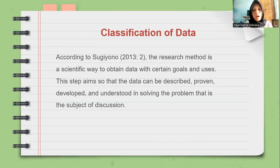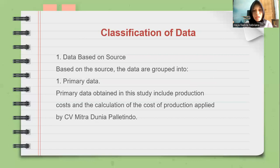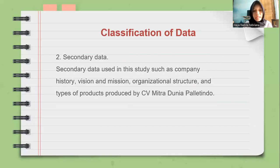The classification of data includes, first, data based on source. The data are grouped into primary data and secondary data. The primary data obtained in this study includes production costs and the calculation of cost of production applied by CV Mitra Dunia Palitindo. The secondary data used in this study includes company history, vision and mission, organizational structure, and types of products produced by CV Mitra Dunia Palitindo.